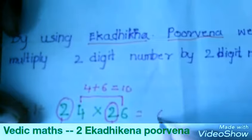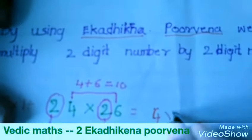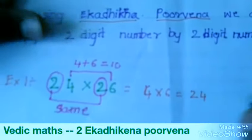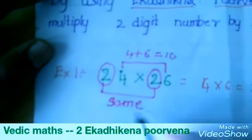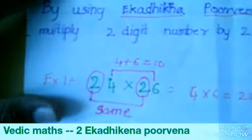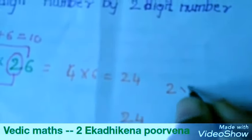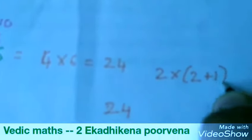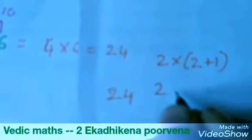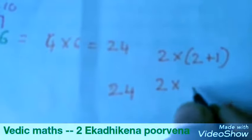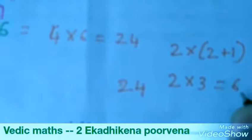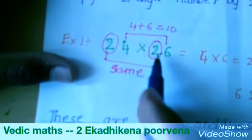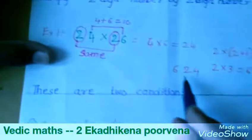4 into 6 is equal to 24. For the remaining digits, we write 2 and multiply it with 2 plus 1, which is equal to 3. So we write 6 here. The multiplication of 24 into 26 is equal to 624.